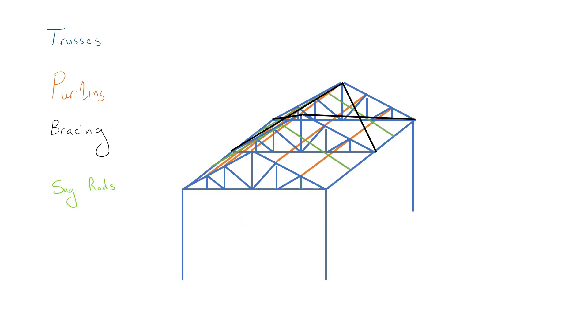Sag rods are tension members used to provide lateral support for the purlins. Let's have a look at the system from the top.